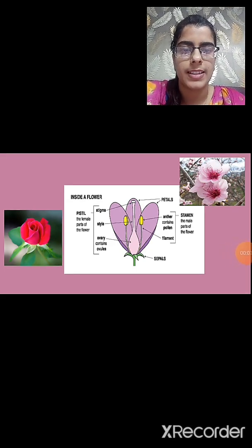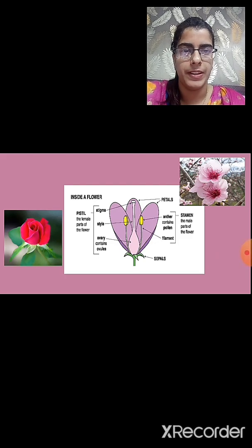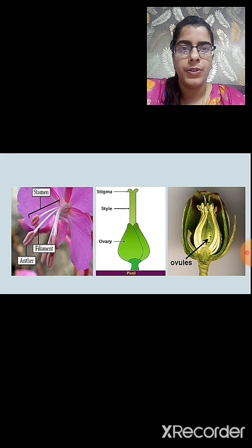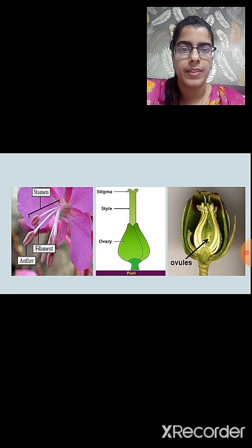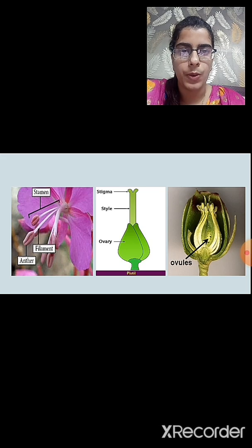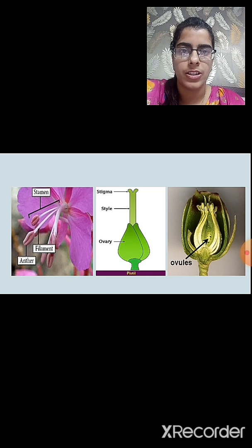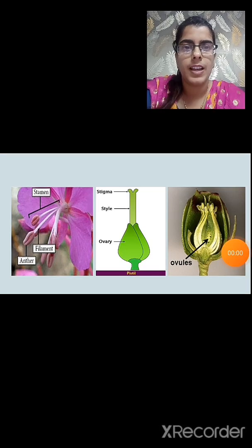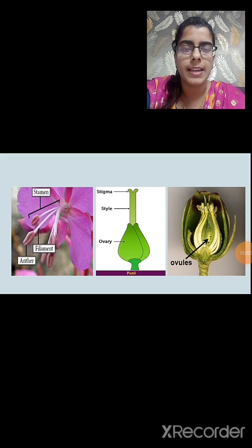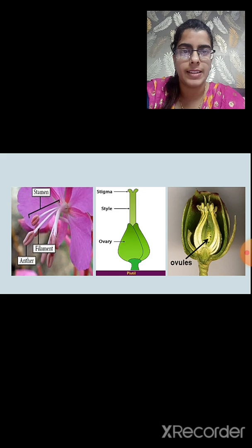To study the inside of the flower, the petals and sepals are removed. You will observe a stamen, which is the male part of the flower and contains the anther and filament. The pistil is the female part of the flower and contains the stigma, style, and ovary. The ovary is the lowermost swollen part of the pistil. If you cut the ovary, you will observe small bead-like structures inside called ovules. The number of sepals, petals, stamen, and pistil may differ for different plants, and some parts may even be absent.